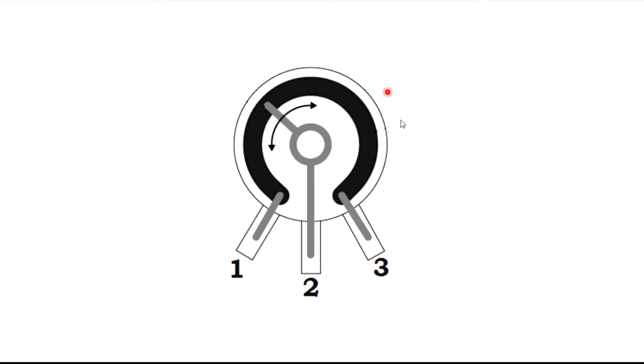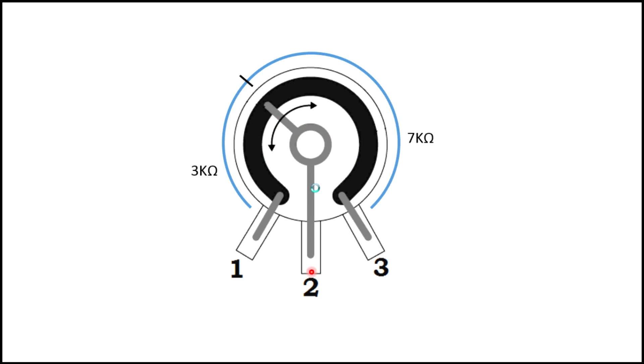This is the internal diagram of a 10 kilo ohm potentiometer. 10 kilo ohm is along the first and third pins. You can change the resistance between the first and second pins by turning the knob. As you turn the knob this metal contact goes left and right.